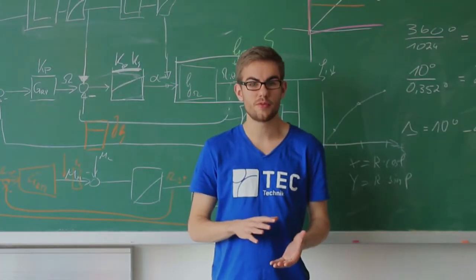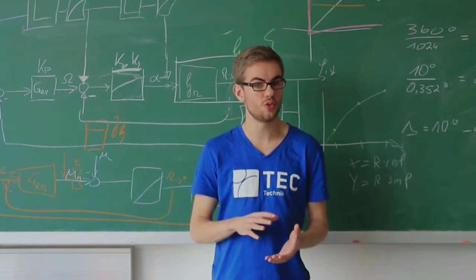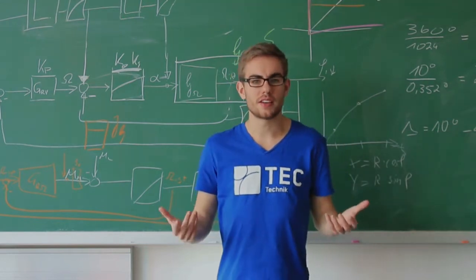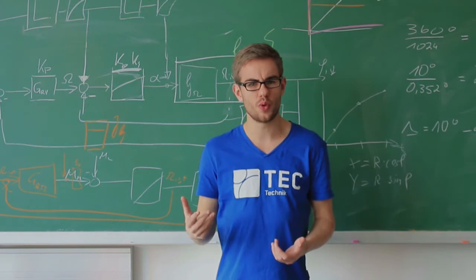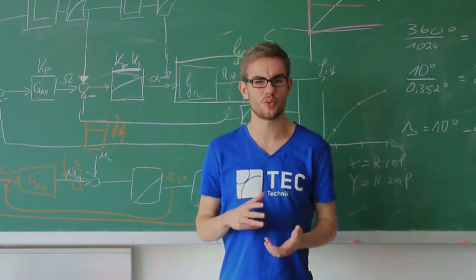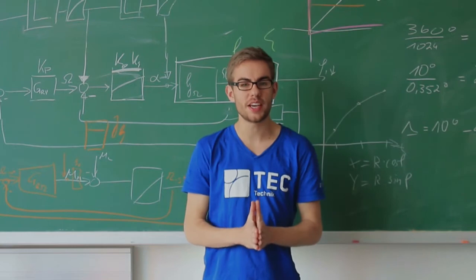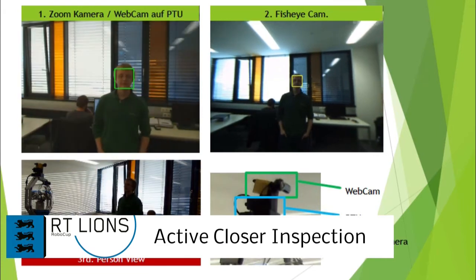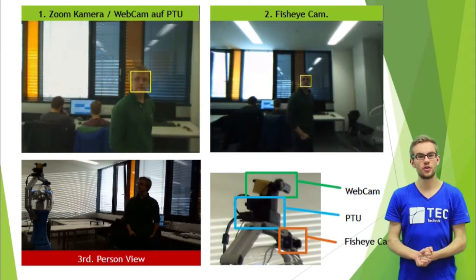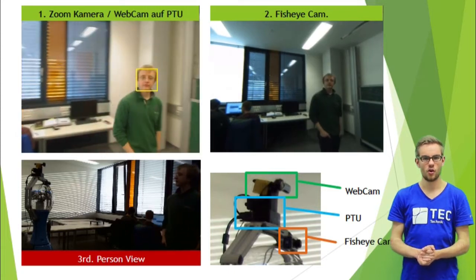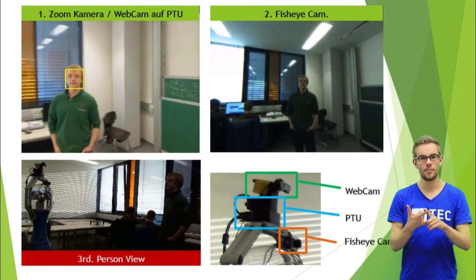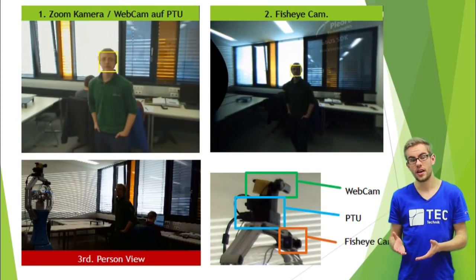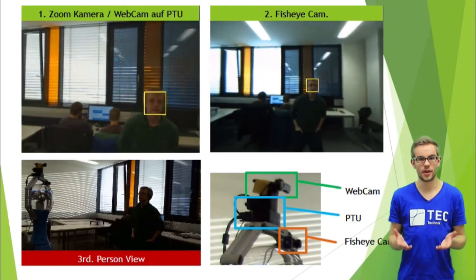Up next is the Active Closure Inspection module, which is used for detecting and following a specific person in Leonie's field of view. Due to the fact that the ACI is one of our main research projects, we put a lot of emphasis in the team description paper. In this video, you can see what ACI can do. So this module consists of two cameras. One fisheye camera and one zoom camera mounted on a PTU, a so-called pan-tilt unit. The fisheye camera is searching the room for people, and the zoom camera tracks it with help of the PTU.